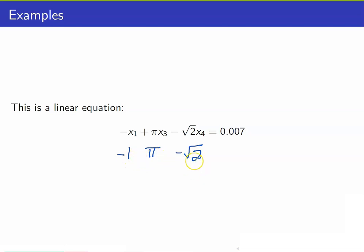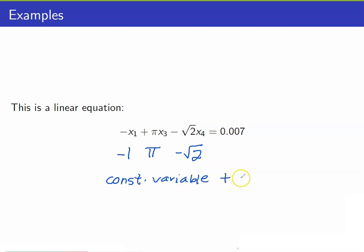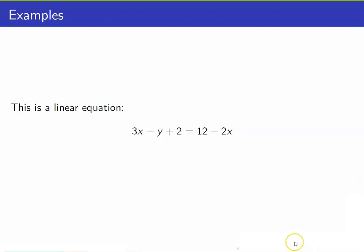Hence, these are all valid coefficients because they are real numbers. For a linear equation, we always have the form of constant times a variable — constant times a variable, and so on — and that should be equal to a constant. This is another linear equation; we can write this as 5x minus y is equal to 10.